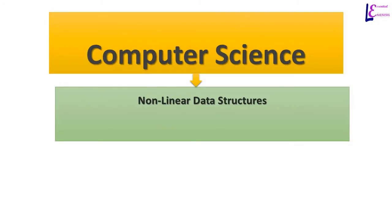In this lecture we are going to learn about the nonlinear abstract data structures, that is trees and graphs. In the previous lecture we learned about linear data structures in which elements are stored and accessed in a sequential manner. Implementation of linear data structures is pretty straightforward and simple. Nonlinear data structures are comparatively hard to implement in computer memory and use the same kind of linear data structures to implement different kinds of behavior and properties in computer memory.